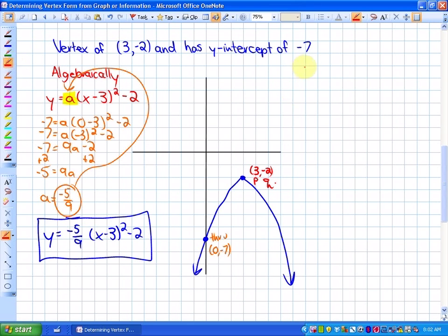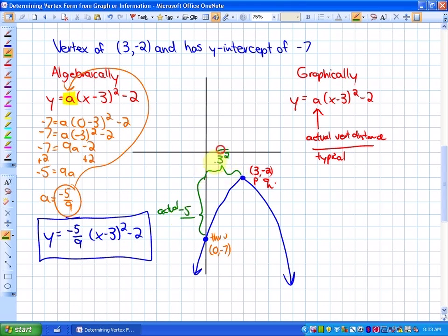If I wanted to do this graphically, the only difference is to determine the value of a, I am going to still use the vertex originally. But to determine the value of a, what I'm going to do is take a fraction of actual vertical distance to typical vertical distance. So what I mean by that is this, the actual vertical distance here from the vertex to that point is negative 5. Whereas the typical vertical distance will be, when I go over 3 units squared, so my typical vertical distance is 9. So my a value is negative 5 ninths, as we saw with the graphical representation. So this function would be y is equal to negative 5 ninths, x minus 3 squared minus 2.